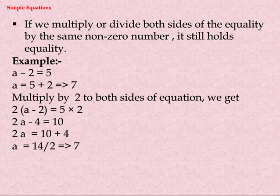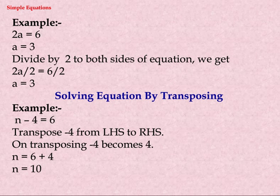If we multiply or divide both sides of an equation by the same non-zero number, it still holds equality. Example: a minus two equals five, so a equals seven. Multiplying both sides by two: two a minus two equals five times two, giving two a minus four equals ten, so two a equals fourteen, and a equals seven. For division: two a equals six — dividing both sides by two gives a equals three.